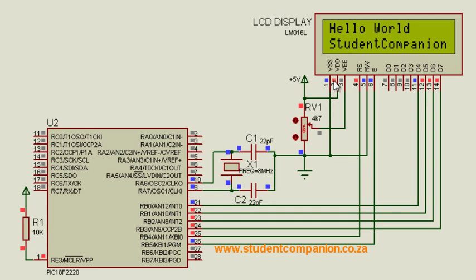The VDD is the positive supply of the LCD and the VSS is the negative supply. The VEE is the contrast pin. You can connect a variable resistor to change the contrast of the LCD.